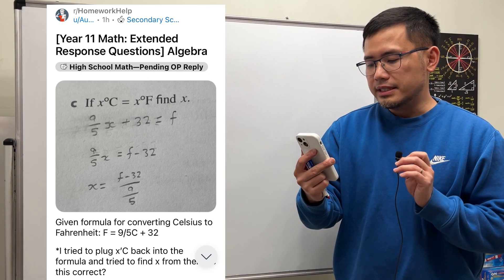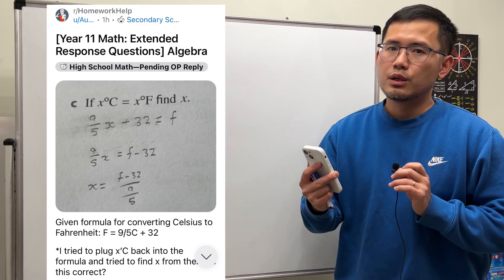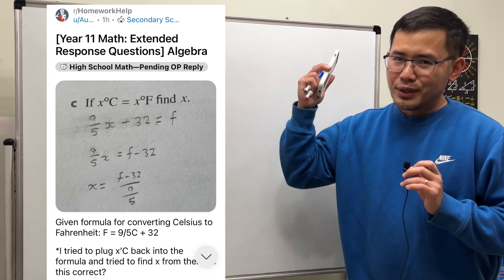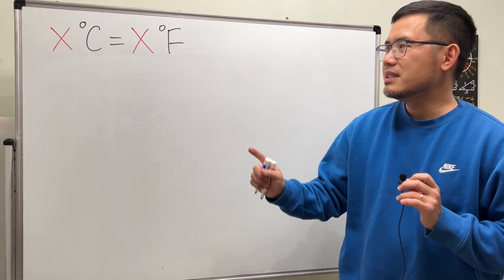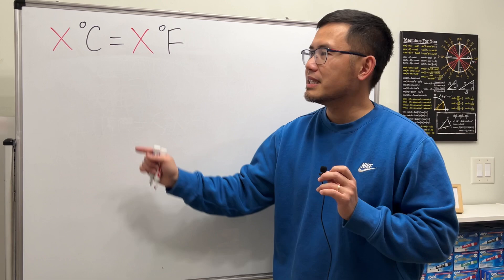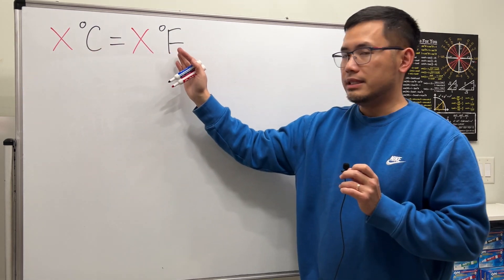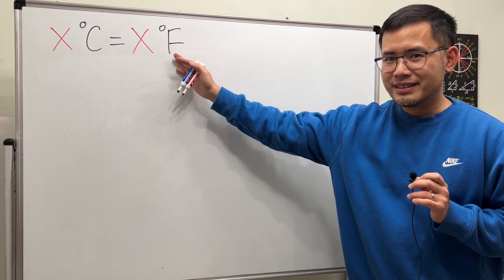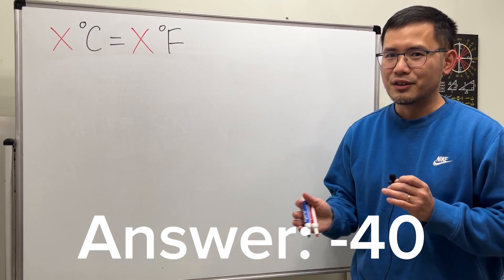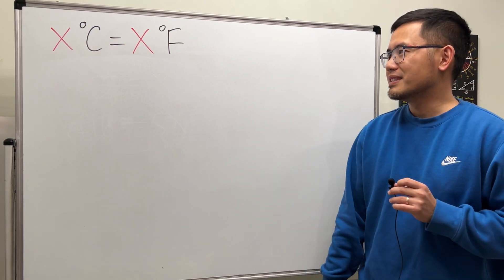If x degrees Celsius is equal to x degrees Fahrenheit, find x. This is such a famous question because this is the only temperature that the Celsius reading is equal to the Fahrenheit reading. And the answer is just negative 40 because it's so famous. Now let me show you how to do it.